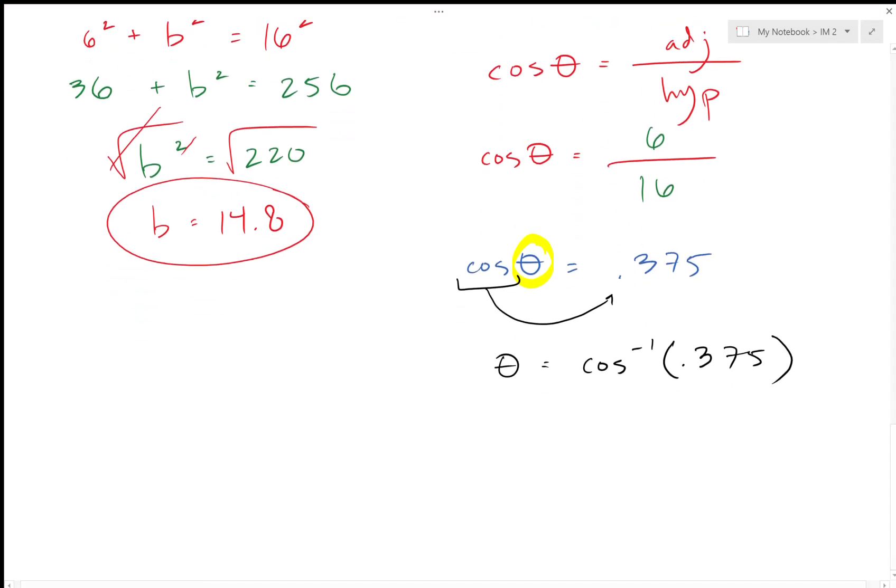So you either hit second or you hit shift, whatever gets you there. So cosine inverse, it's right above cosine. So the cosine inverse—do it on my calculator—0.375 is 67 point, and then I see a 97.